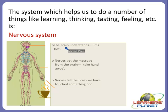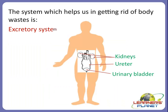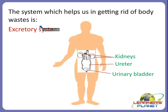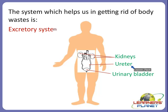The brain is one such very interesting and exciting organ present in the nervous system. The excretory system helps us in getting rid of body wastes and consists of kidneys, ureter, and urinary bladder.